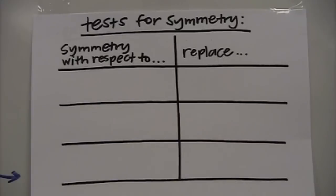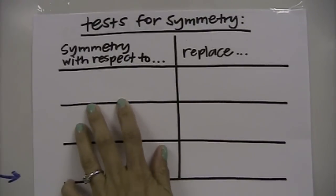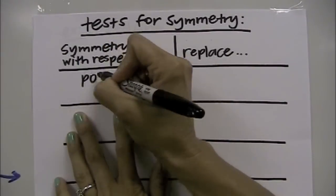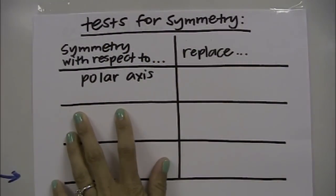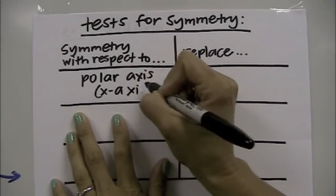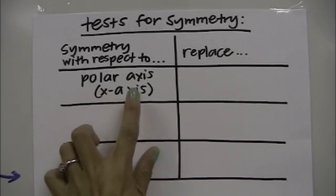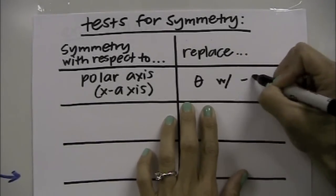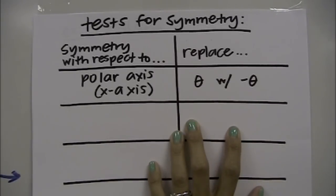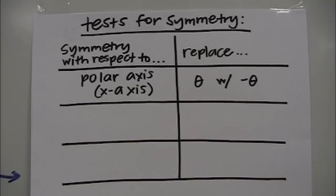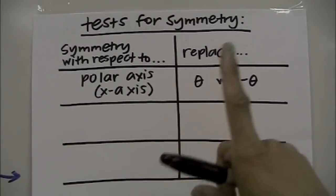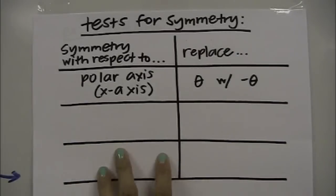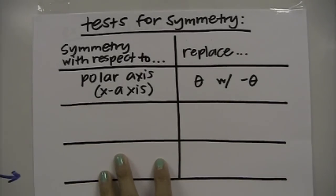Next, we're going to talk about tests for symmetry. We have three different things to check. The first is symmetry with respect to the polar axis, which is the same as the x-axis. To check for polar axis symmetry, you replace θ with negative θ. If the resulting equation is the same as the original, then you have polar axis symmetry. If it's not the same, it may or may not have polar axis symmetry.